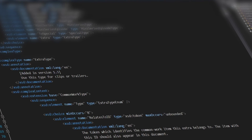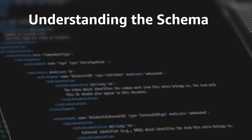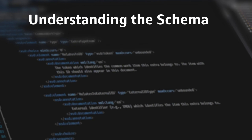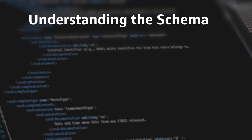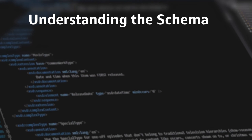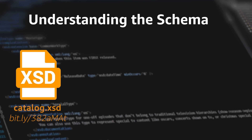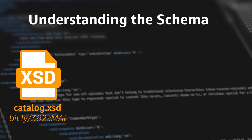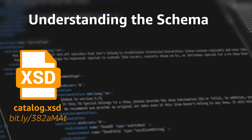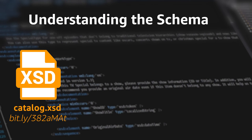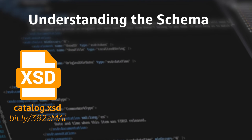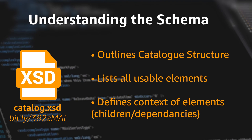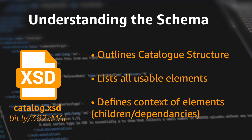In order to get the most out of your catalogues, you're going to want to fully understand the schema and how different elements operate. The whole schema itself is defined inside the catalog.xsd file — you can download it via the link on screen now if you prefer to have a local copy. This file outlines all of the elements and their associations that are used within CDF files.